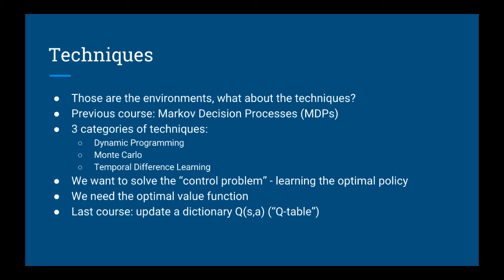What about the techniques you'll be learning? In my previous reinforcement learning course, we learned about three main techniques for solving Markov decision processes, or MDPs: dynamic programming, Monte Carlo, and temporal difference learning. We learned that what we want to do eventually is solve the control problem — that means learning the optimal policy, so that whenever we're in a state, we take the best action. We learned that one of the main ingredients is the optimal value function, and by keeping a dictionary that maps states and actions to values, called a Q-table, we can eventually find the optimal policy by iteratively updating it based on experience.